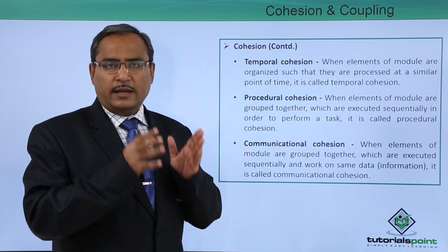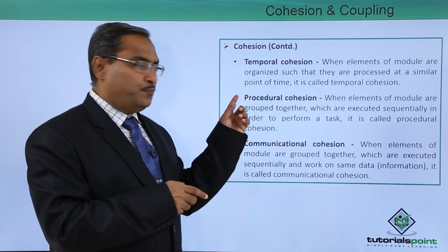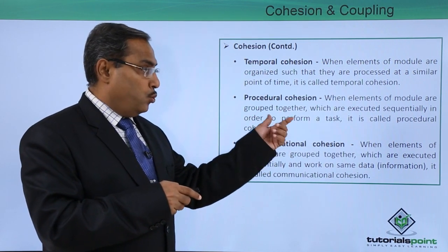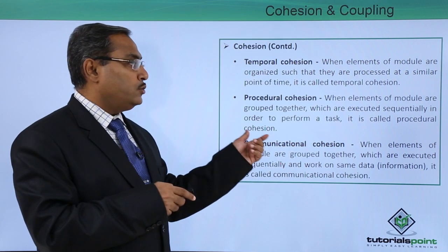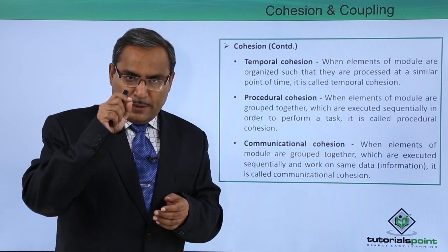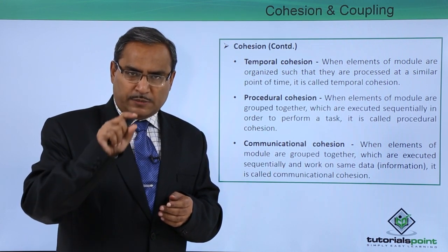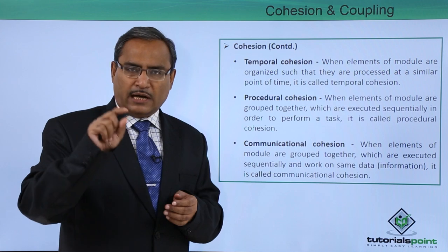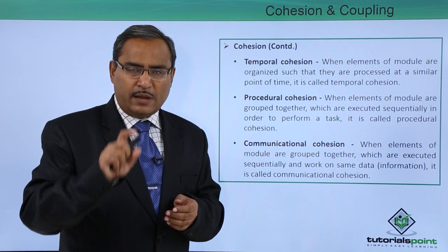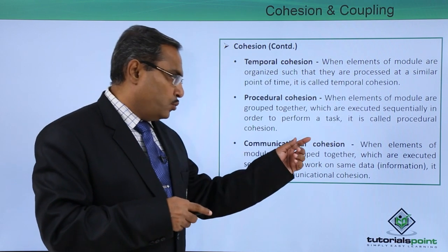The next type is procedural cohesion. Procedural cohesion means when elements of a module are grouped together and executed sequentially in order to perform a task. To implement one task in the software, if you develop one module — so that when the module gets executed the task is accomplished — then you can say that module has procedural cohesion.